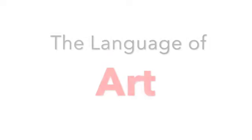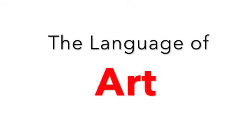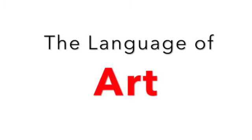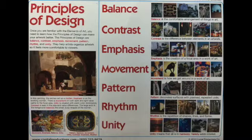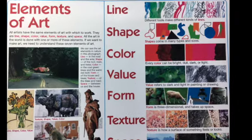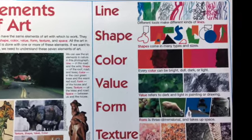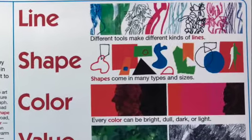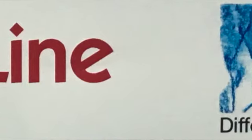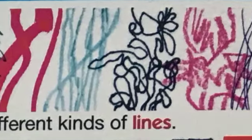People who make art are called artists. Artists use words to describe art. The language of art is called the elements of art and principles of design. We will be using these words throughout the year, and today we will start with lines. Artists use lines in many different ways.